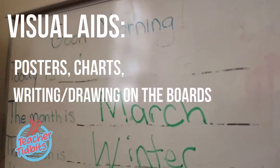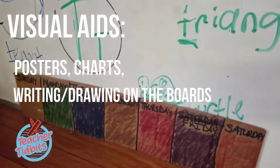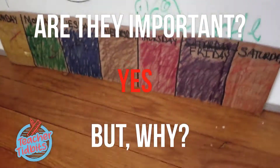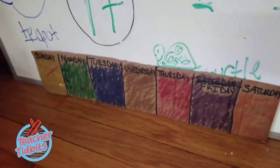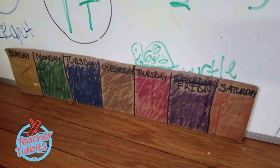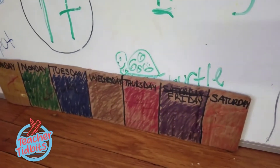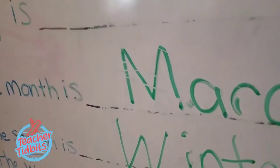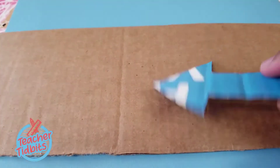So what are visual aids? They're typically some sort of poster, chart, or anything that's on the board to help the education experience. And are they important for young learners? Yes. I am an expert in the area of early education, so I typically work with preschoolers, kindergarten through second grade. A lot of times these kids in this age range cannot read or write yet, so visual aids help them to take in the information around their environment.